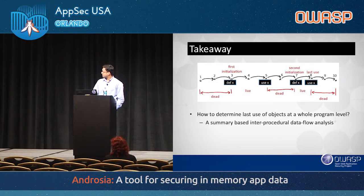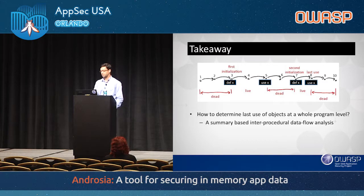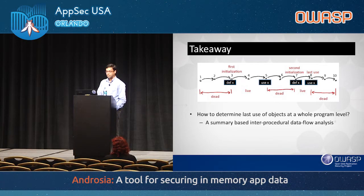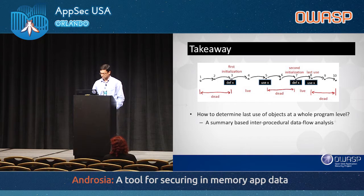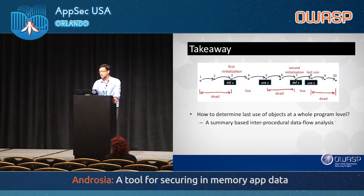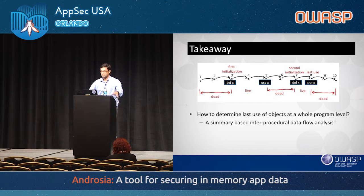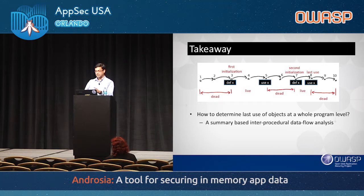X is redefined at statement 7 and used at statement 8. Between 5 and 7, there is no use of X, so X is dead. X is live between 7 and 8, and dead after 8. That's the definition of liveness. Our tool determines the last use of objects at a whole program level — not just within a single method.